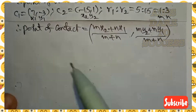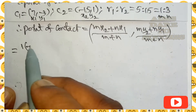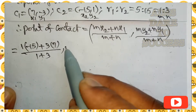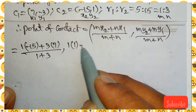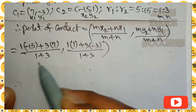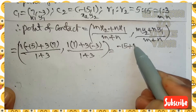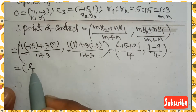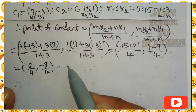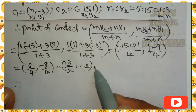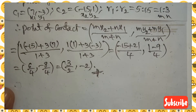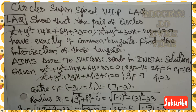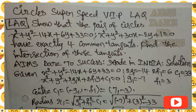Substituting: x-coordinate = (1×(-15) + 3×7)/(1+3) = (-15 + 21)/4 = 6/4 = 3/2. y-coordinate = (1×1 + 3×(-3))/(1+3) = (1 - 9)/4 = -8/4 = -2. So the intersection of the four common tangents is (3/2, -2). I hope you understand, my dear students. If you are satisfied with my explanation, please subscribe to our Aims Dare to Success channel.